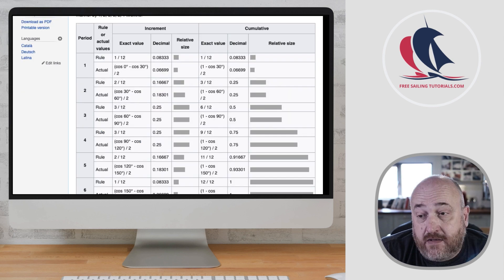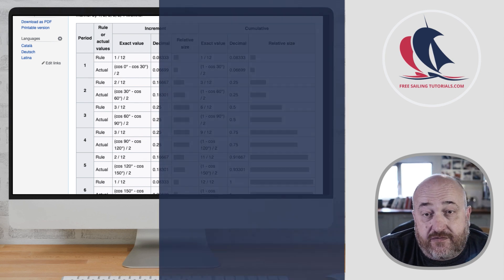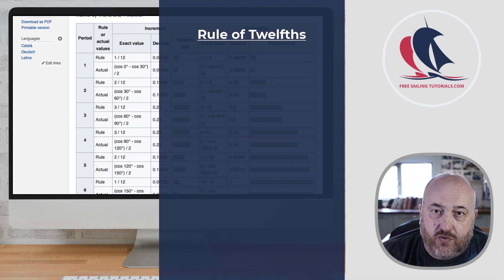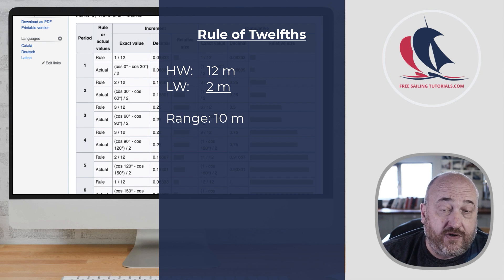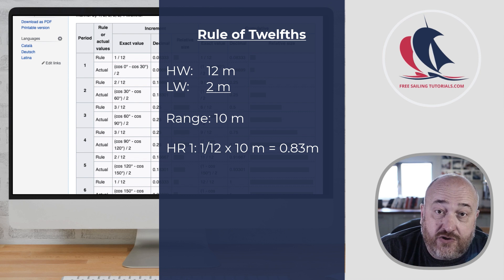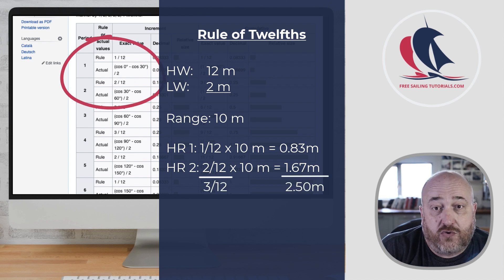It's very straightforward. If we look at six hours of flood tide, the first hour of the flood tide we would estimate to be one twelfth of the total range we're expecting. So if you had a low water of two meters and a high water of 12 meters, there would be a 10-meter range — 10 meters of tide that we're expecting to arrive over the period on the flood. In the first hour we would have one twelfth of that amount.